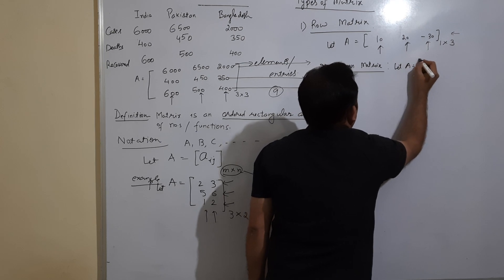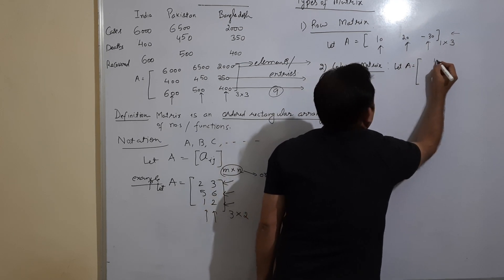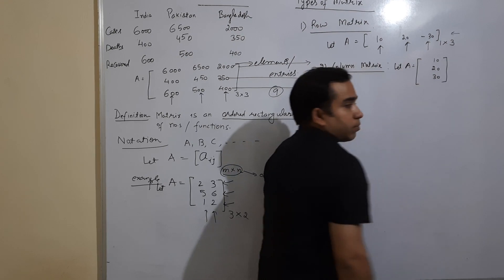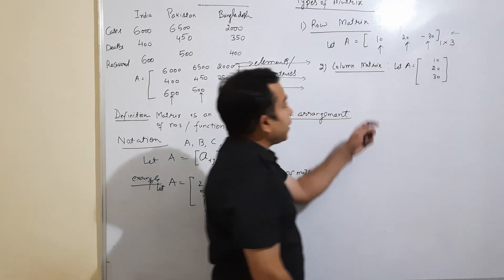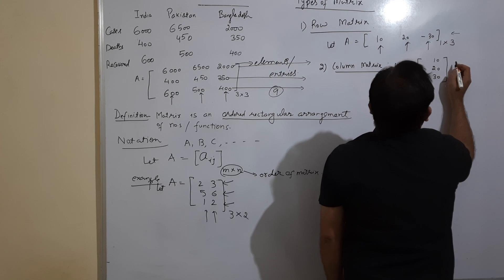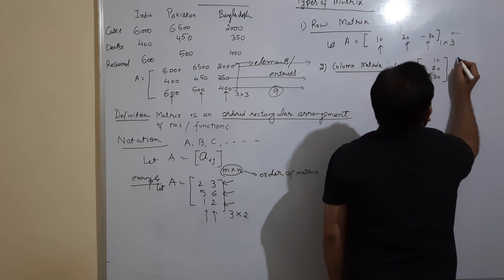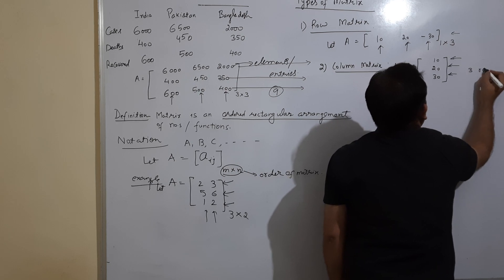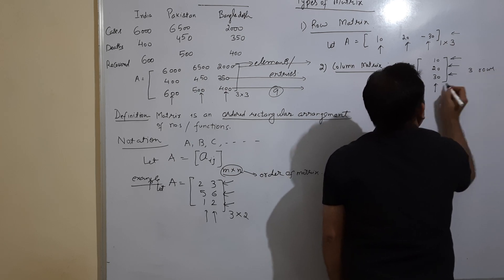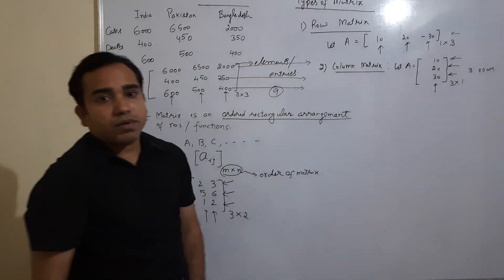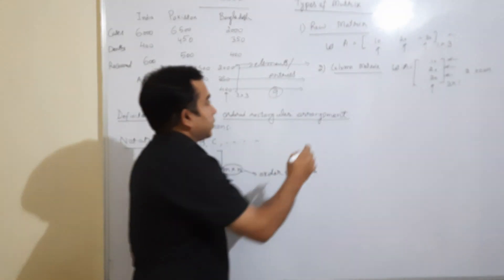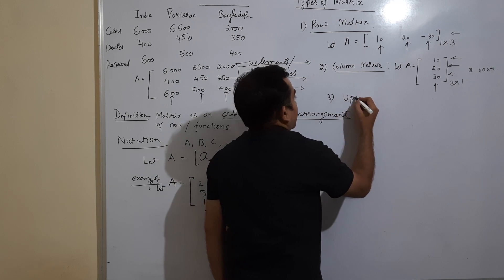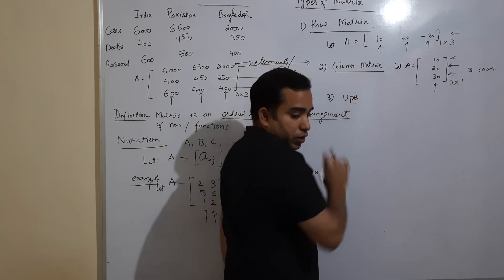Next is a column matrix. A column matrix is a matrix in which there is only one column. The number of rows can be more than one — for example, three rows — but there is only one column. So its order is 3×1. This is a column matrix.